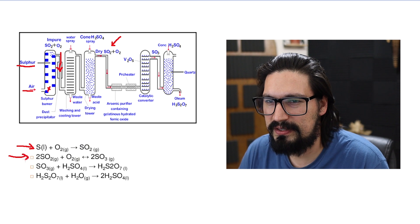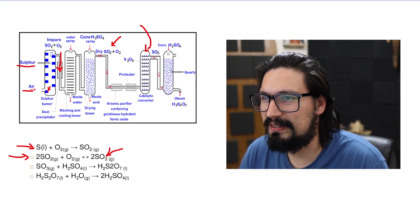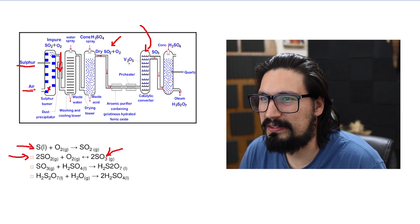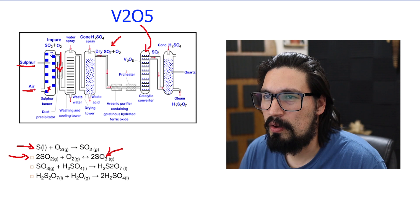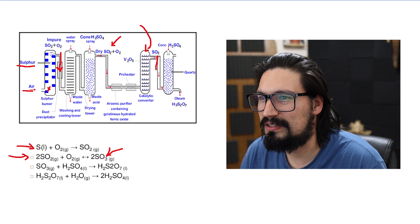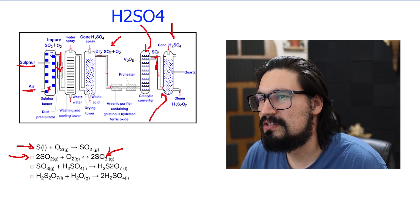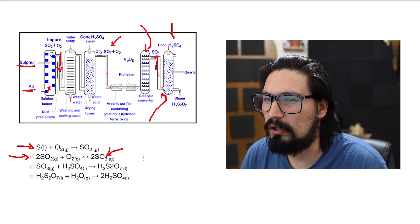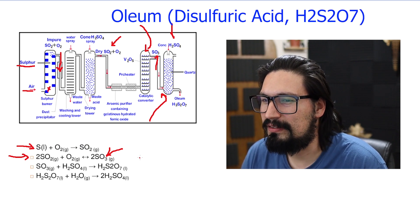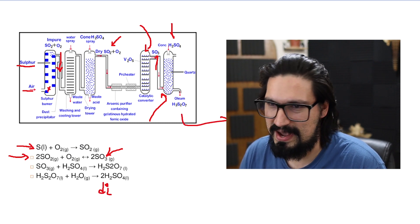Next, the sulfur dioxide is further oxidized to sulfur trioxide in a catalytic converter using vanadium pentoxide (V₂O₅) as catalyst. The sulfur trioxide is then mixed with more sulfuric acid to form oleum, which is essentially highly concentrated sulfuric acid. That is how the contact process works.